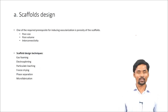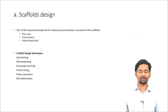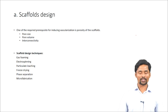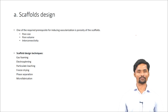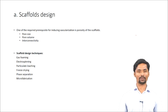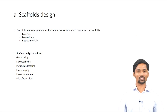The first strategy is scaffold design. One major prerequisite for introducing a vascular network into the scaffold is porosity — the scaffold must be highly porous and highly interconnected. There are several strategies through which we can prepare porous scaffolds, including gas foaming, electrospinning, particulate leaching, freeze drying, phase separation, and microfabrication.